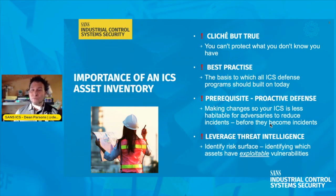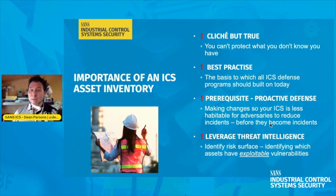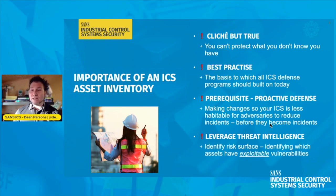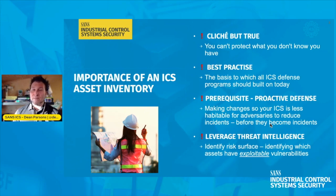Asset inventory is actually a prerequisite for things like proactive defense — that allows us to make changes to our ICS to make it less habitable for the adversary, to reduce incidents and get ahead of them. We can do this by leveraging threat intelligence. Once we have a formal ICS inventory in place, threat intelligence melded together with the inventory gives us an identity of the risk — identifying which assets may be vulnerable and prioritizing based on what is exploitable in the network.